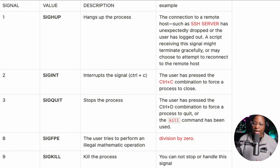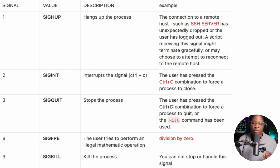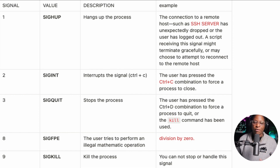The SIGFPE signal is referenced with numeric value eight, and is used when the user tries to perform an illegal mathematical operation, for example division by zero. You also have the SIGKILL signal referenced with numeric value nine, which is used to kill the process. The SIGKILL and SIGSTOP signals cannot be handled — when using the trap command in your program, you cannot trap SIGKILL or SIGSTOP.